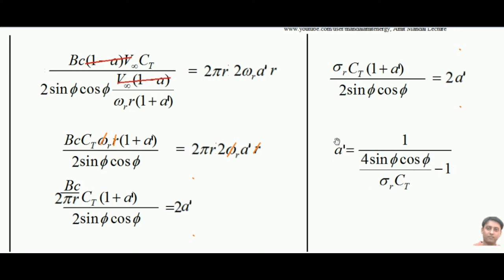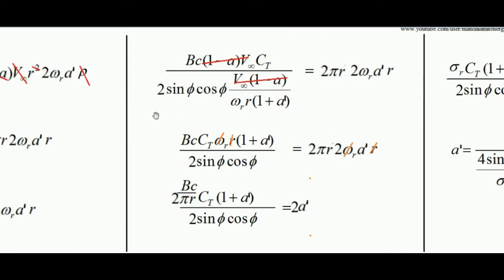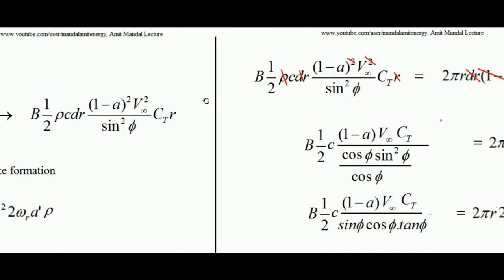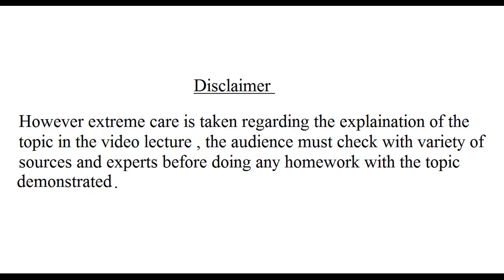So what we see is that the angular induction factor A' is dependent on the angle φ, the angle between the relative velocity of wind and the tangential direction, and on σR and CT. I hope by this small lecture you would have understood the associated derivations of blade element method applied to a wind turbine. Thank you.